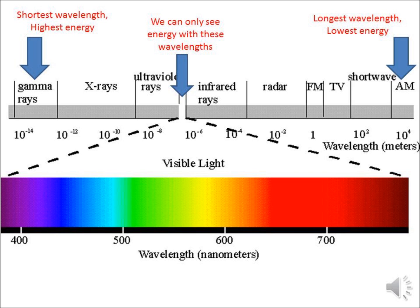When you move further to the right beyond visible light, you've got energy with longer wavelengths — things like infrared rays. A lot of kids who play video games are familiar with infrared because it means night vision; if you have infrared goggles, you can see at night. Moving further right, you get to radar, then FM radio waves, then television waves, shortwave, and AM radio waves. Each of these has a longer and longer wavelength. AM radio has the lowest energy, which actually explains why AM radio signals aren't as strong as FM — FM has a shorter wavelength and more energy, so the sound quality is much better.